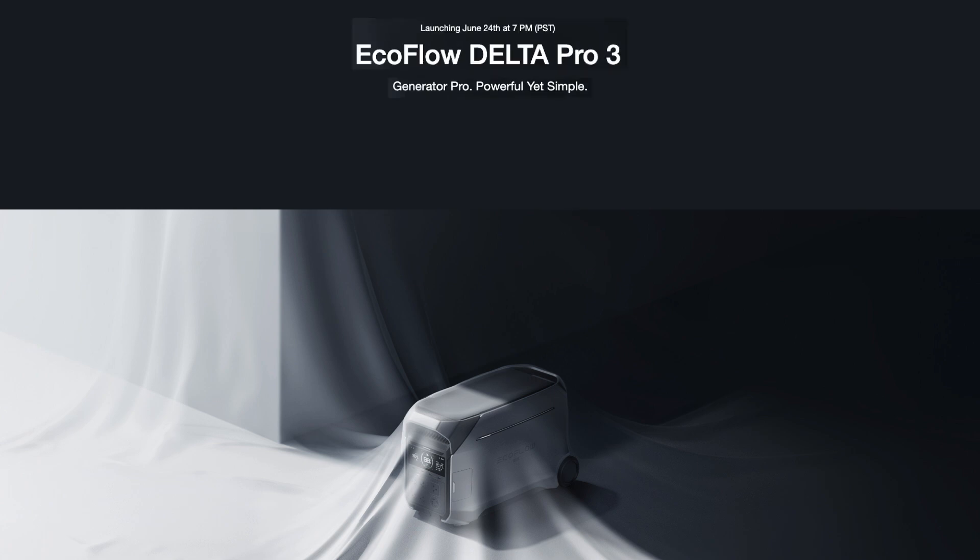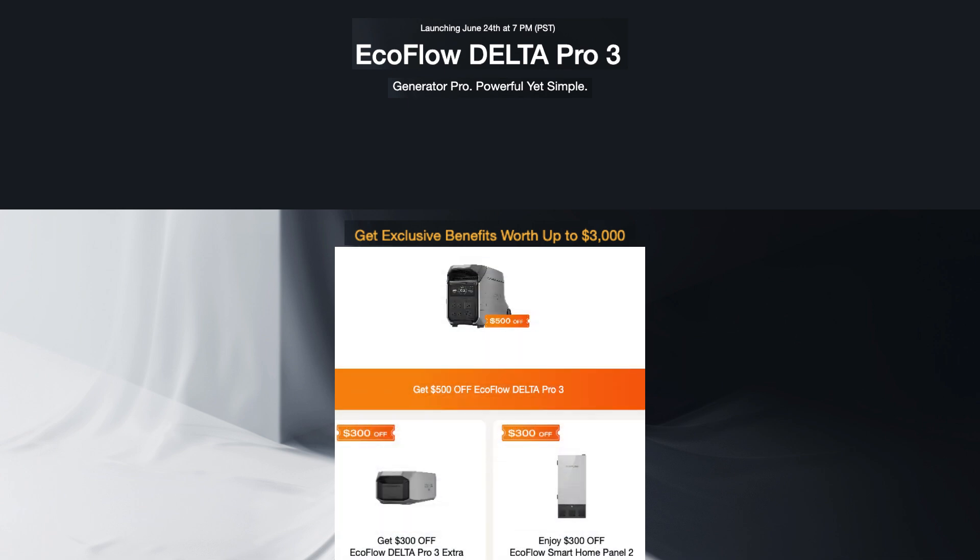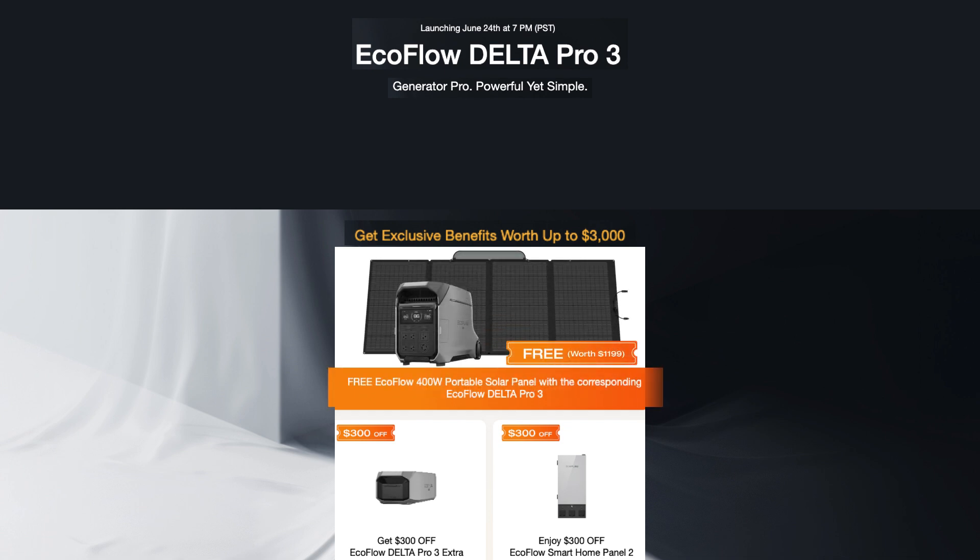Before concluding this video, I want to make you aware of another huge sale that is coming available today. EcoFlow will be offering benefits worth up to $3,000 on some of their products. You can get $500 off the Delta Pro 3 and get $300 off an extra battery for it. You can also obtain $300 off EcoFlow Smart Home Panel 2. Furthermore, you can extend the savings when you purchase the Delta Pro 3. You can get a free 400 watt portable solar panel. These are just a few of the items that are on sale. To look at the full extent of the sale, simply go to this web address.